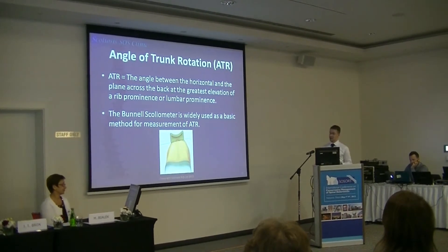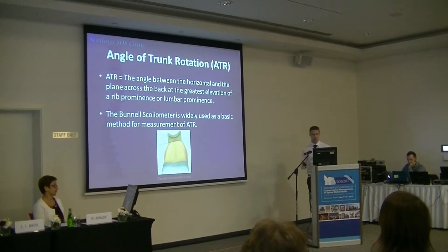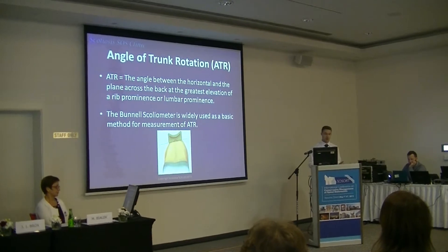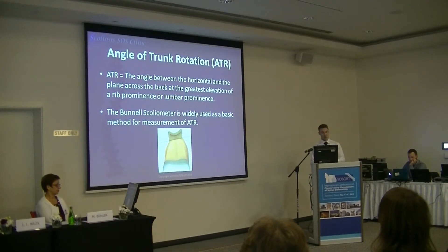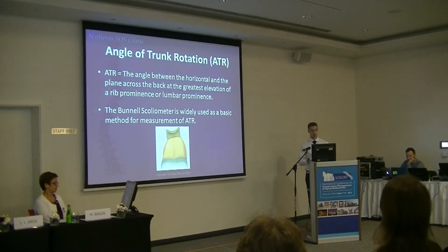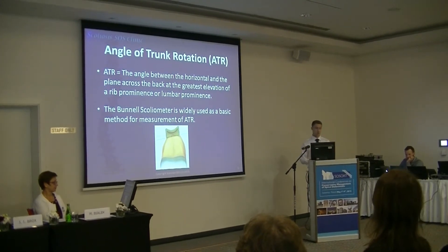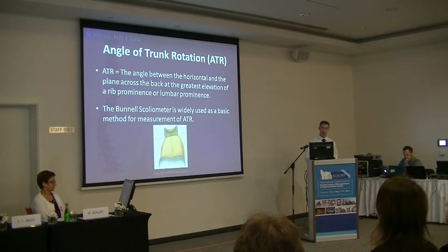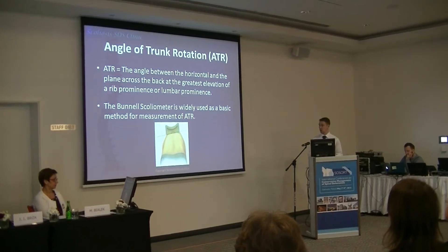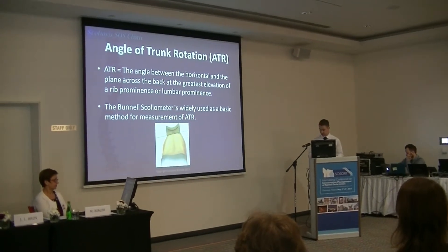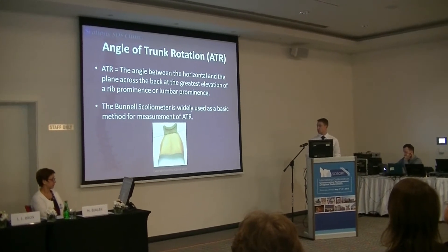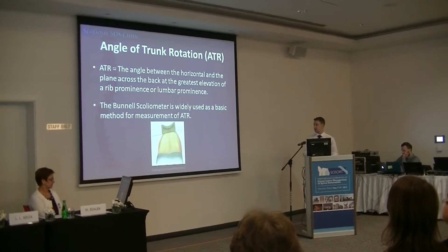ATR is the angle between the horizontal and the plane across the back at the greatest elements of a rib prominence or a lumbar prominence. For this purpose, we use the Bunnell scoliometer, which I believe is the most widely used for measuring the ATR.